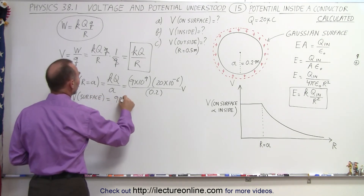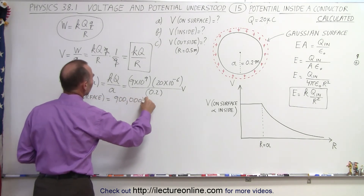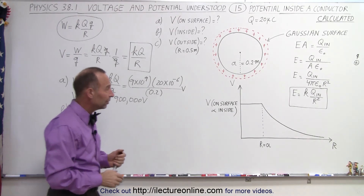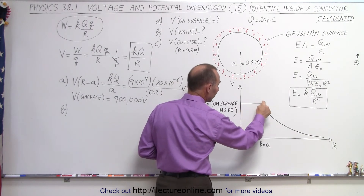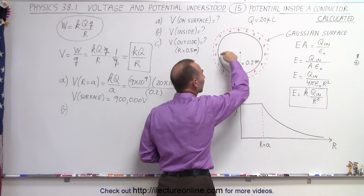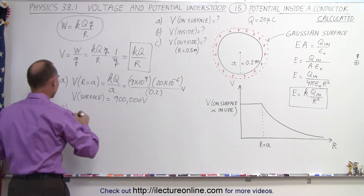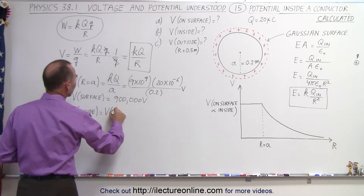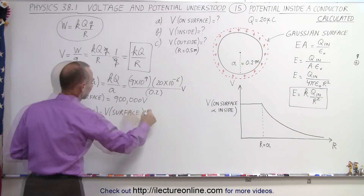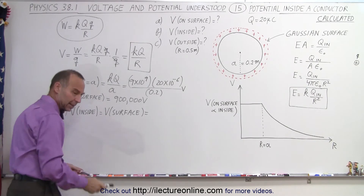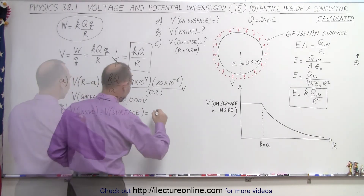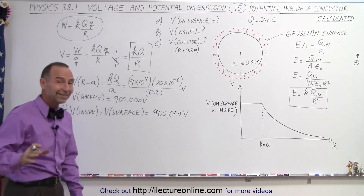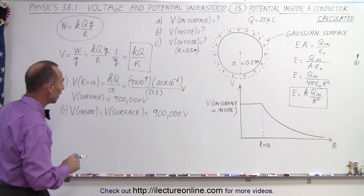For part B, when we're trying to figure out the voltage inside the sphere, we realize it must be exactly the same as the voltage on the surface, because there's no electric field inside a charged conductor. Therefore, V inside equals V on the surface, which is 900,000 volts. The potential inside is exactly the same as the potential on the surface.